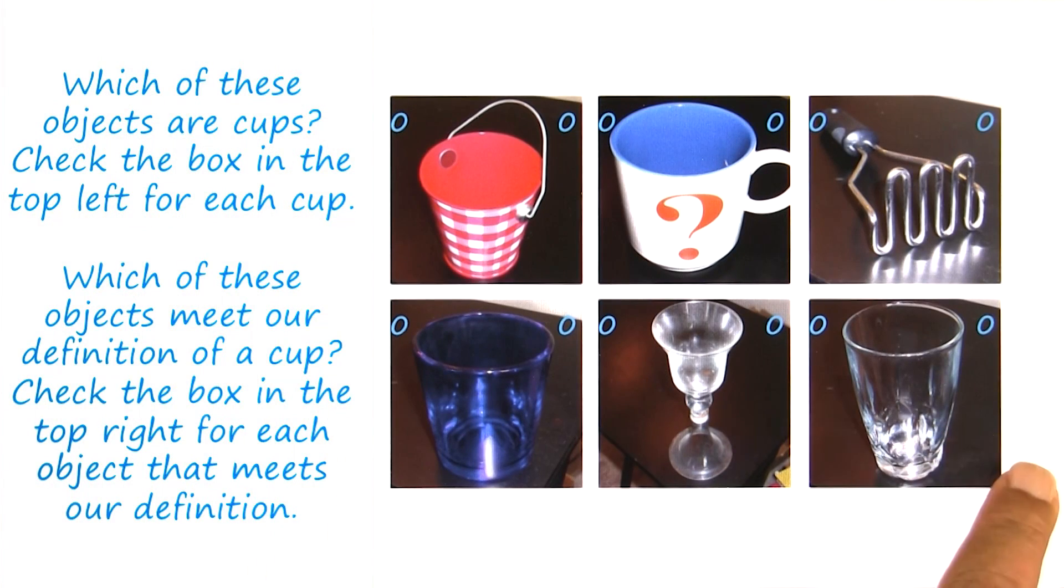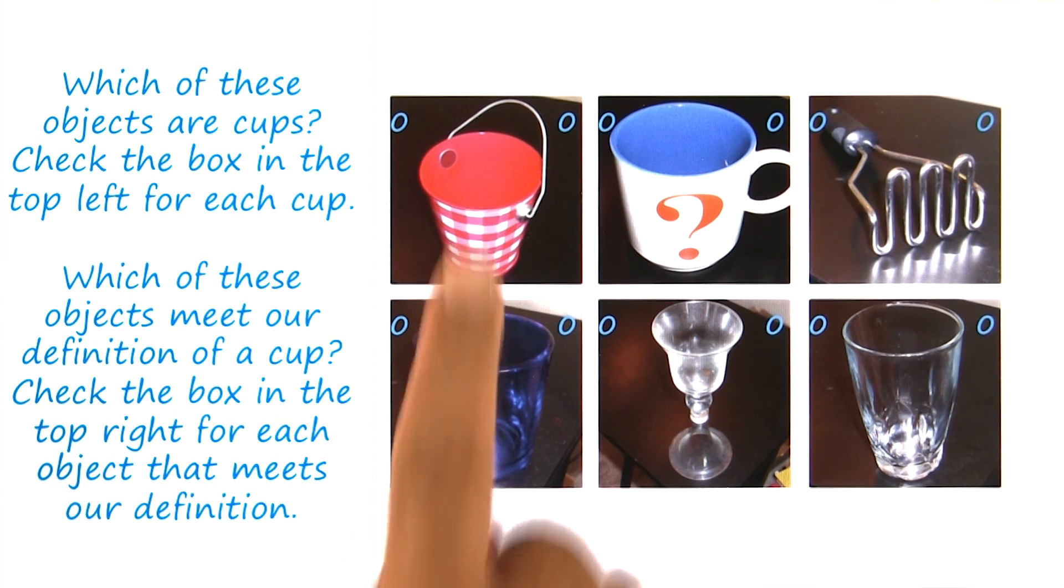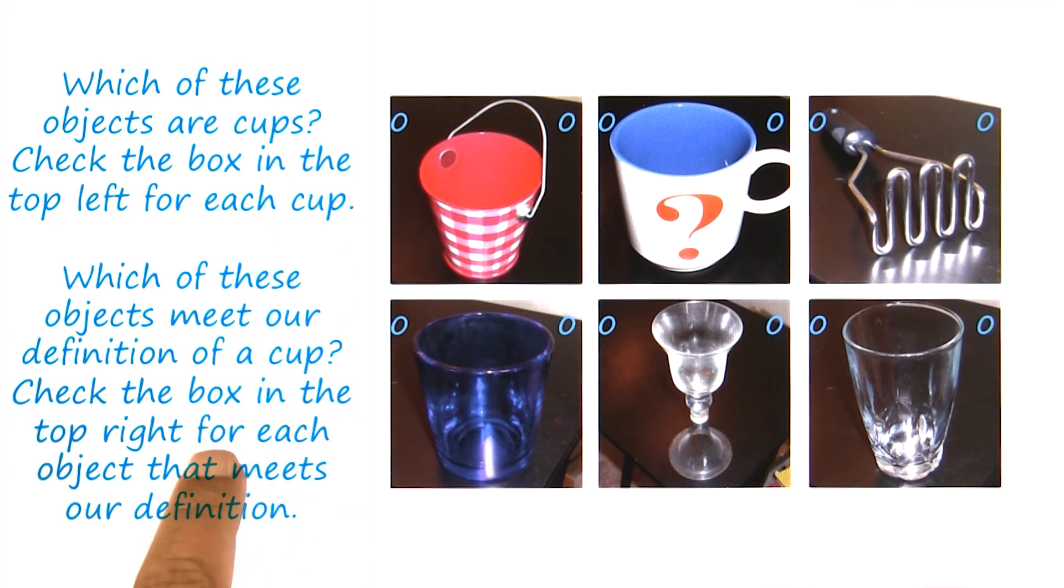Let us do an exercise together that will illustrate the need for learning by correcting mistakes. Shown here are six objects, and there are two questions.